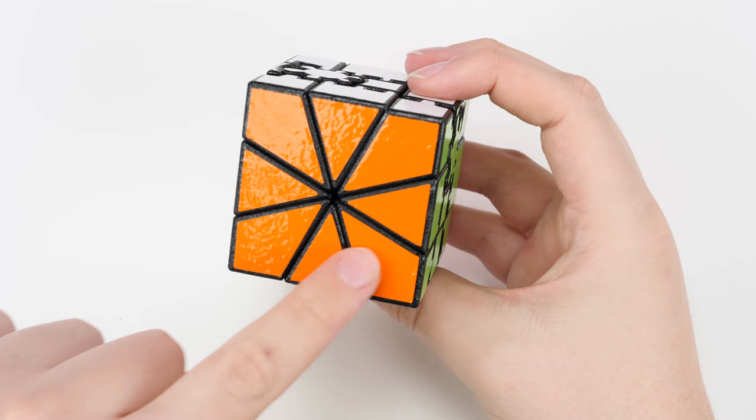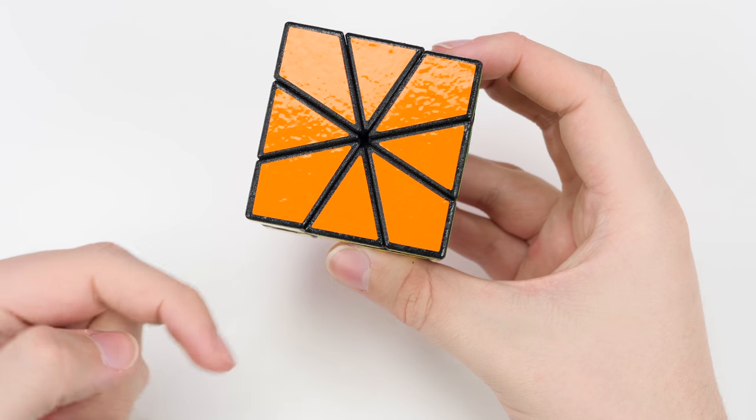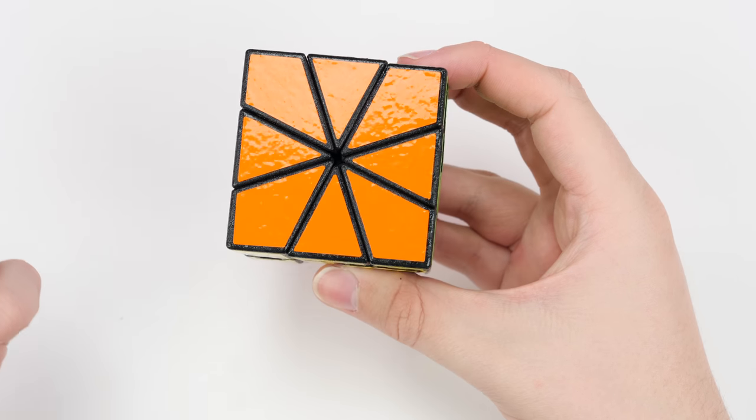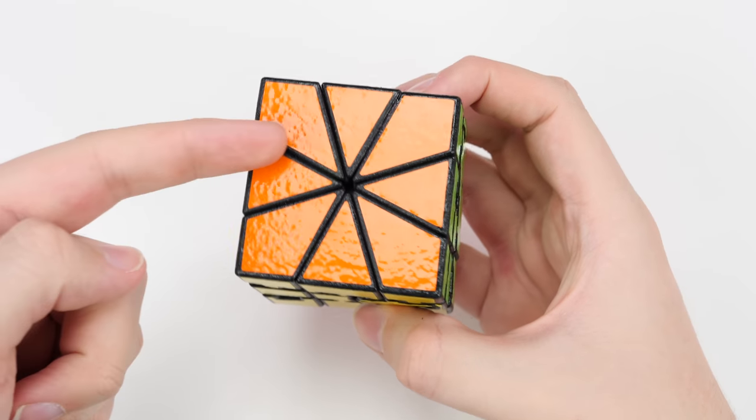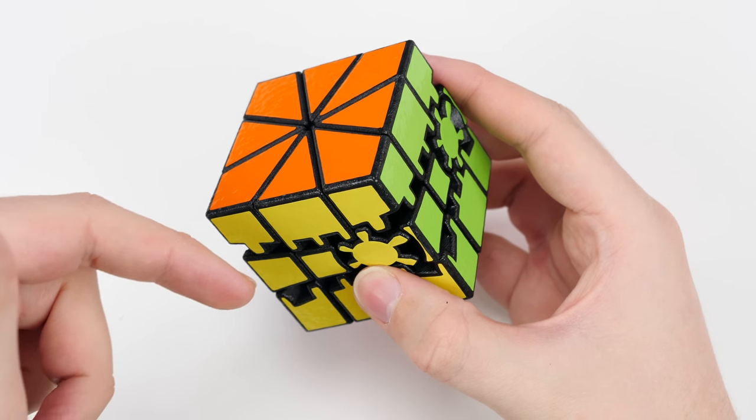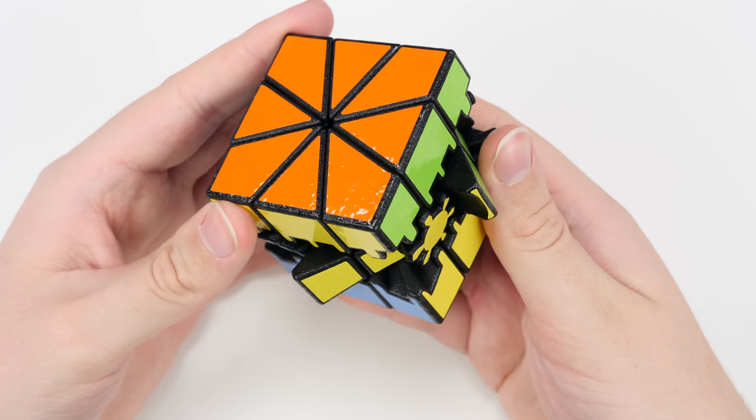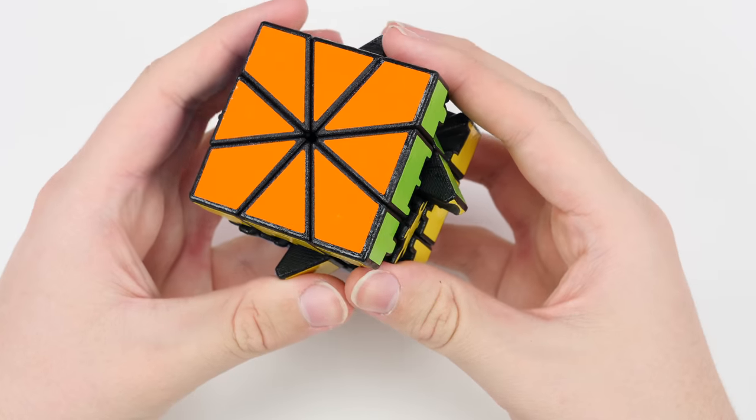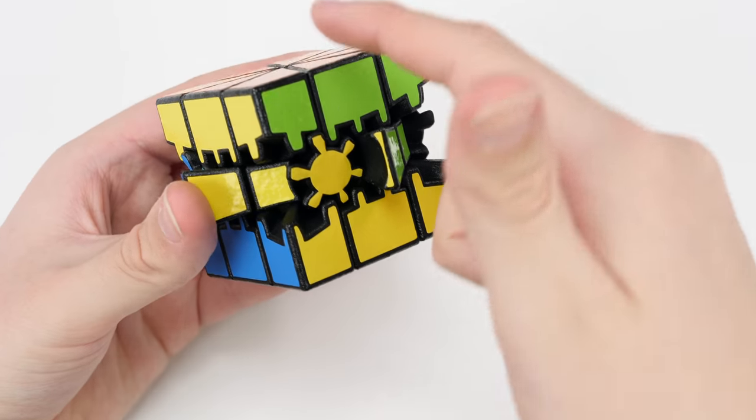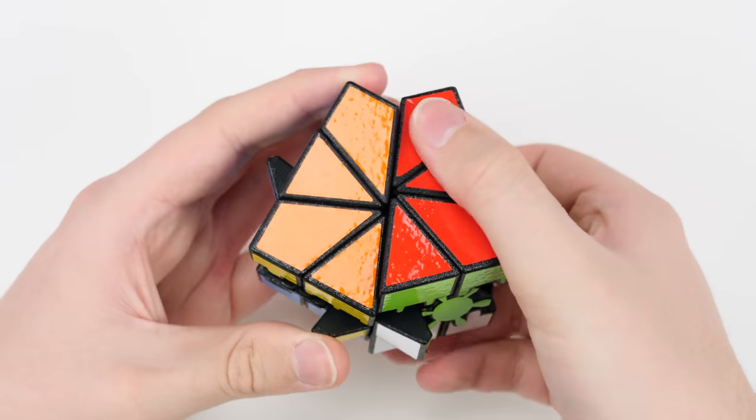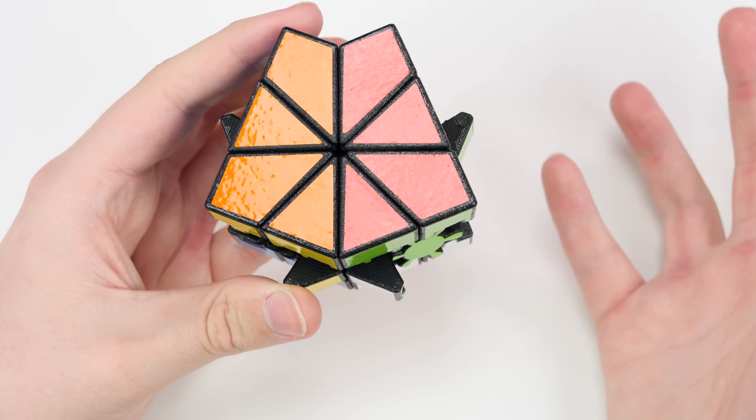The reason why the angle of all the cuts are the same on this puzzle is basically so that you can actually split up pieces without it becoming too bandaged. If the puzzle was cut just like a square one the gears would interfere with the slice turns too much and you wouldn't really be able to scramble the puzzle that much but now because of this you can do a 90 degree turn and then still do a slice turn and it still works.